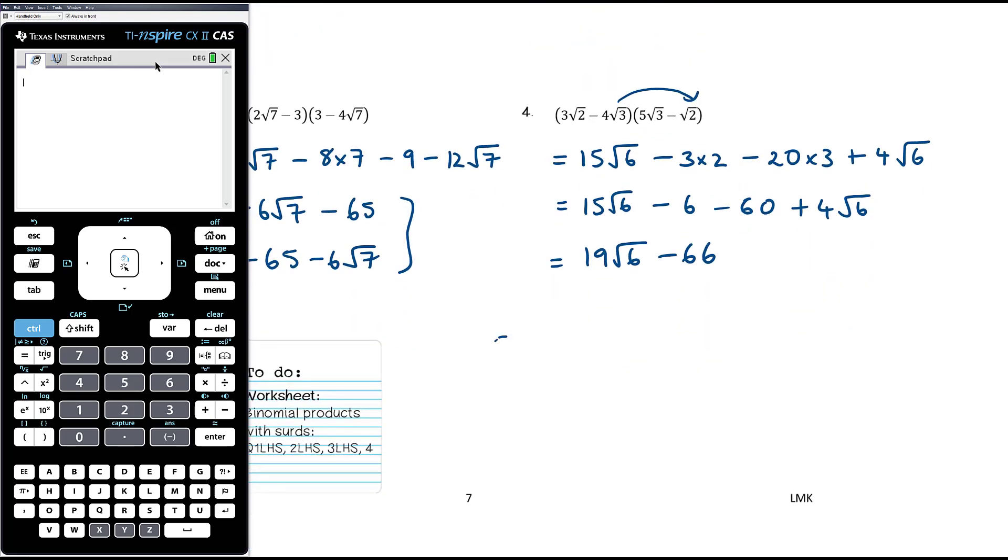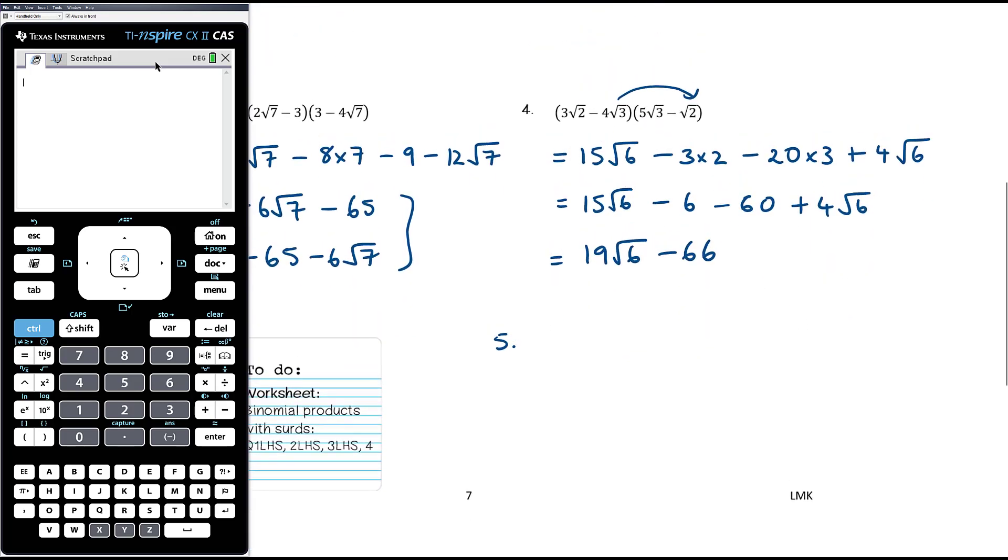So let's say, let me add in an example 5 here. Let me make something up. Let's say, for example, that we have 2 root 2 plus 1 times 7 minus... Let me just think about my numbers.